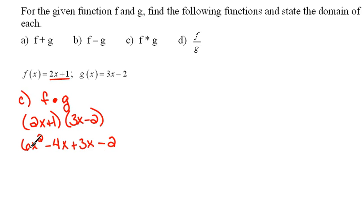And then we can clean up or combine our like terms. So this is 6x squared minus x minus 2. This is our F times G function.